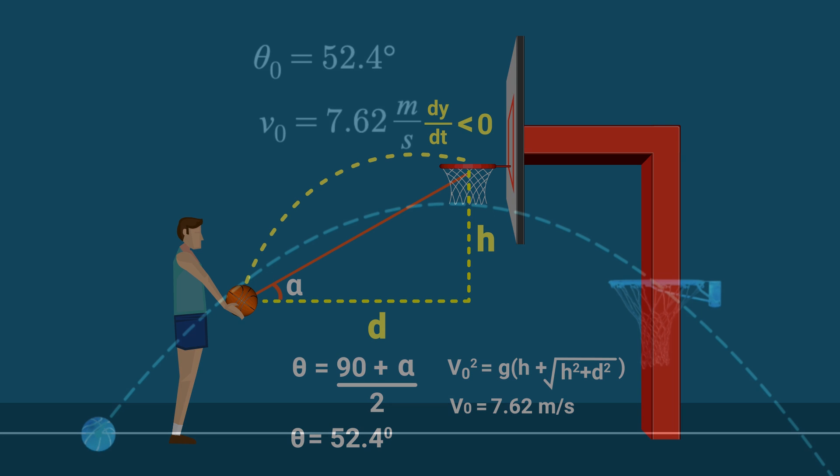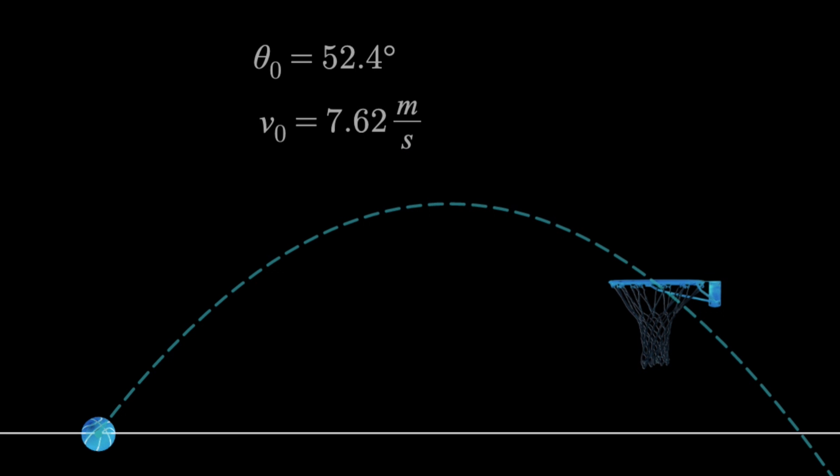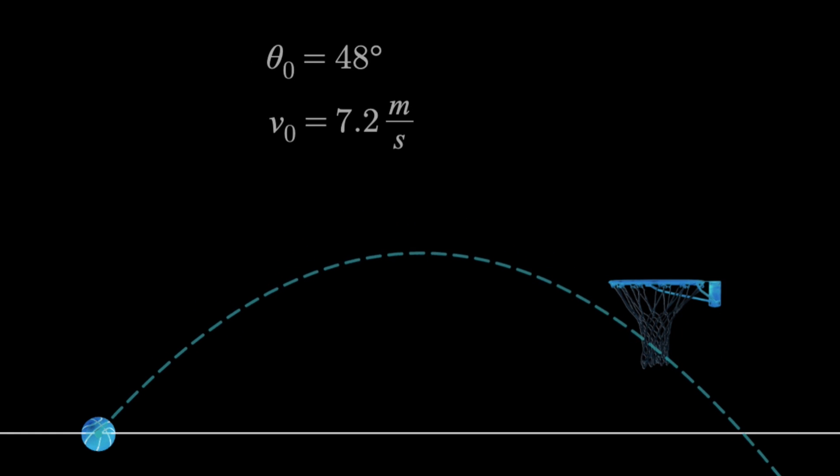I simulated this with Desmos, and here you'll see with those values the ball will go down through the center of the hoop, but if I lower the initial velocity by any amount, then regardless of the angle, it won't make it to that center point. Meaning 7.62 was our minimum.